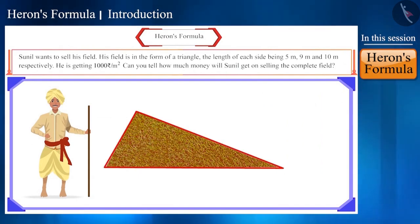Sunil wants to sell his field. His field is in the form of a triangle. The length of each side being 5 meter, 9 meter and 10 meters respectively. He is getting rupees 1000 per meter square. Can you tell how much money will Sunil get on selling this field?